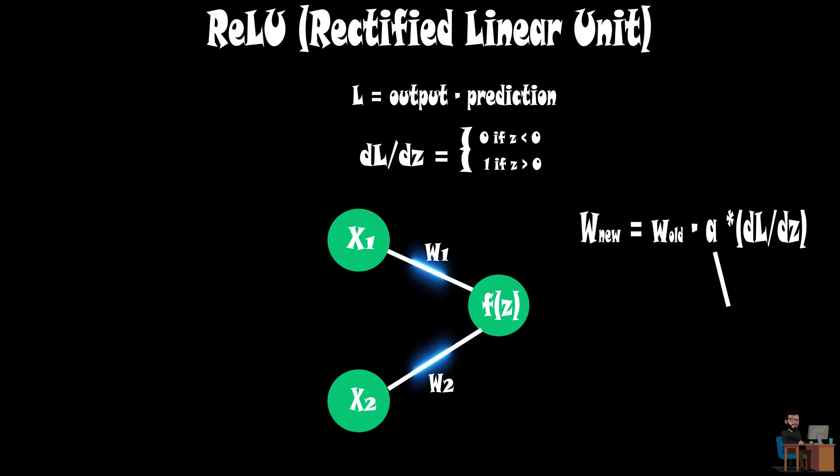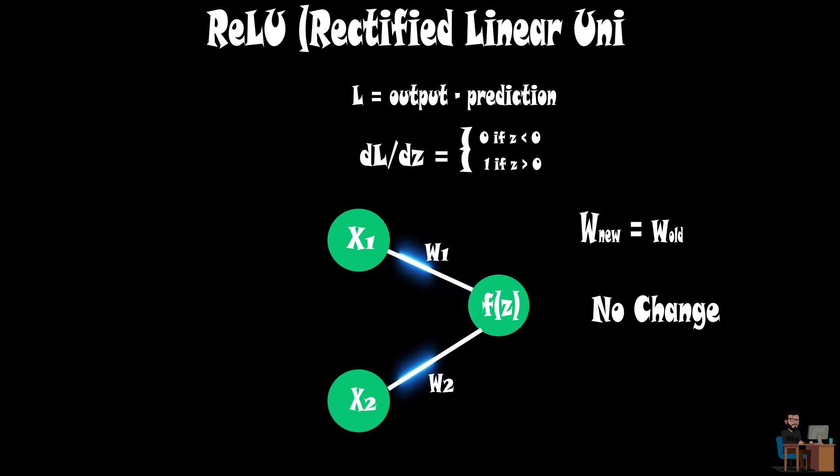This raises a serious problem. How will it learn with zero gradient? The weight will not update even a tiny bit due to zero gradient, no matter how many forward-backward passes you make. So where is the learning in this case?